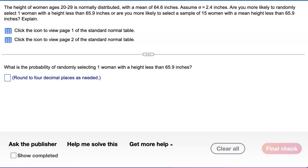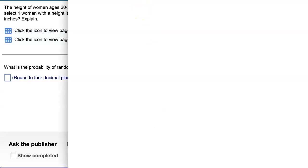The height of women ages 20 to 29 is normally distributed. So when I read that part 'normally distributed,' we're opening up StatCrunch Normal Calculator.